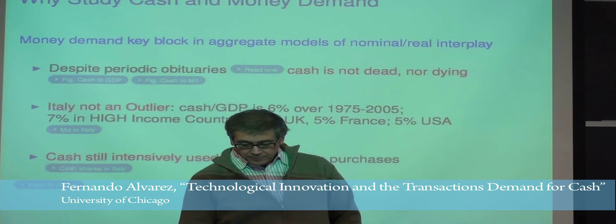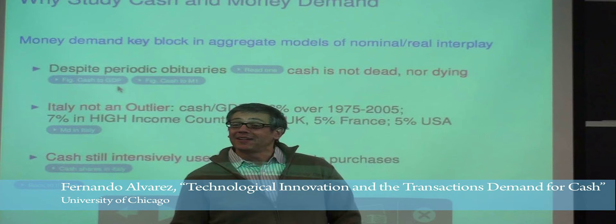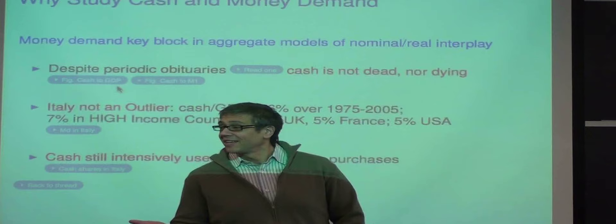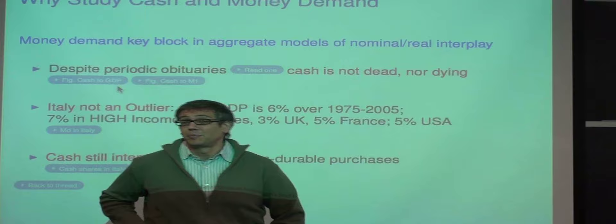We're going to be looking at data from Italy in this paper. Italy is not that strange. There may be that people think it's pretty much 6% of GDP like in the rest of the world, their currency is not used anywhere else, and cash is still intensively used in Italy.